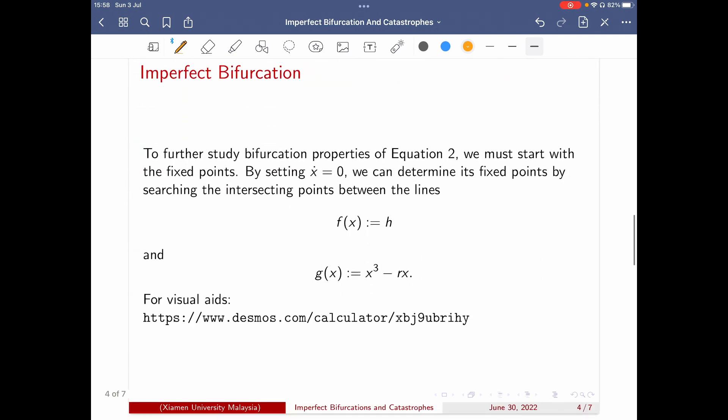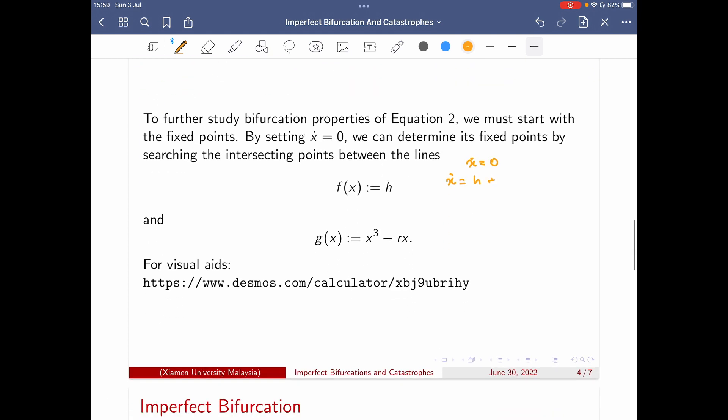So how does it happen? To further study the bifurcation properties in Equation 2, we must start with the fixed points. So the fixed point happens to be x dot equal to zero. Then look back to the equation, the x dot equal to h plus rx minus x cubed. So setting this to be zero and do a little bit modification, just a plus minus stuff.